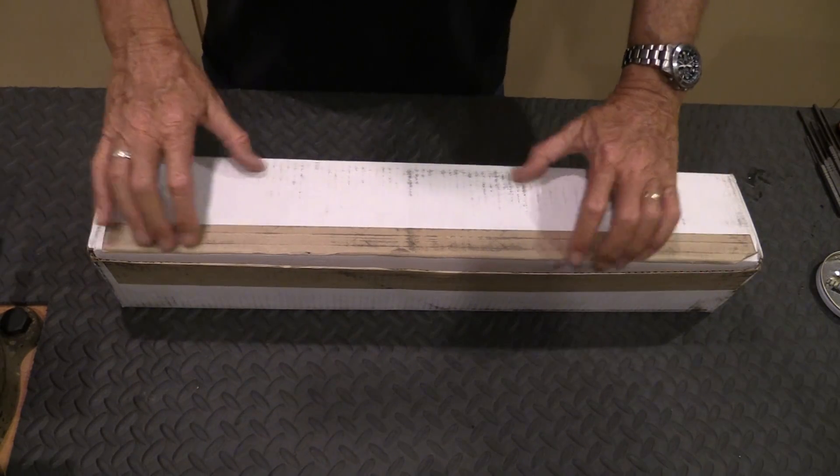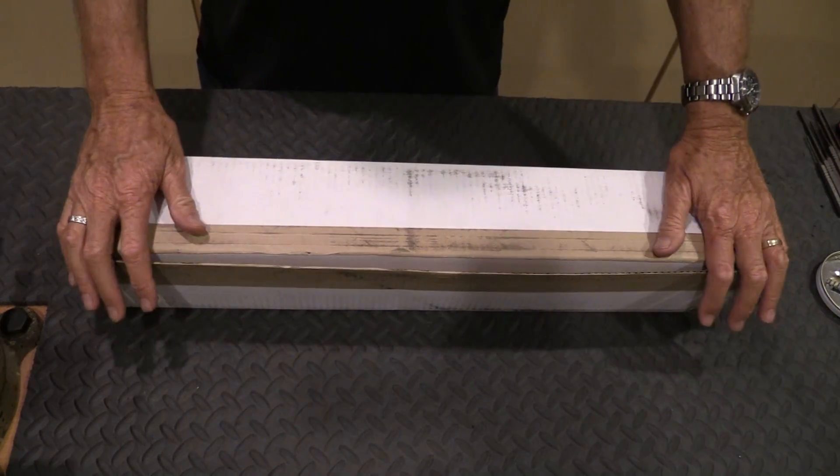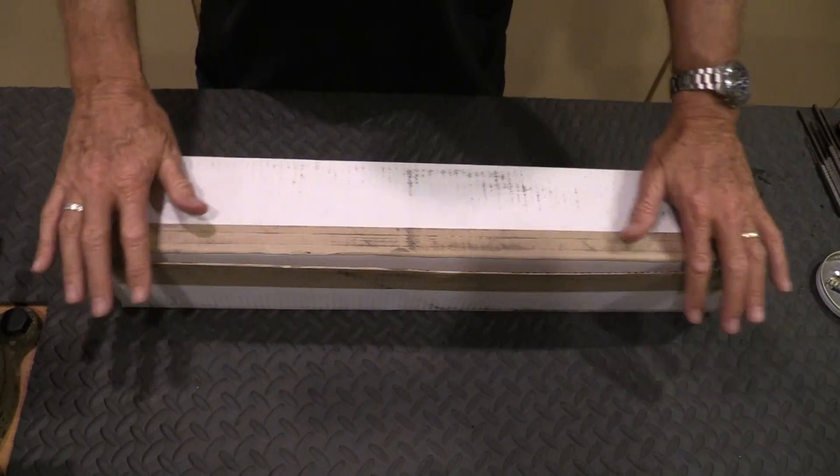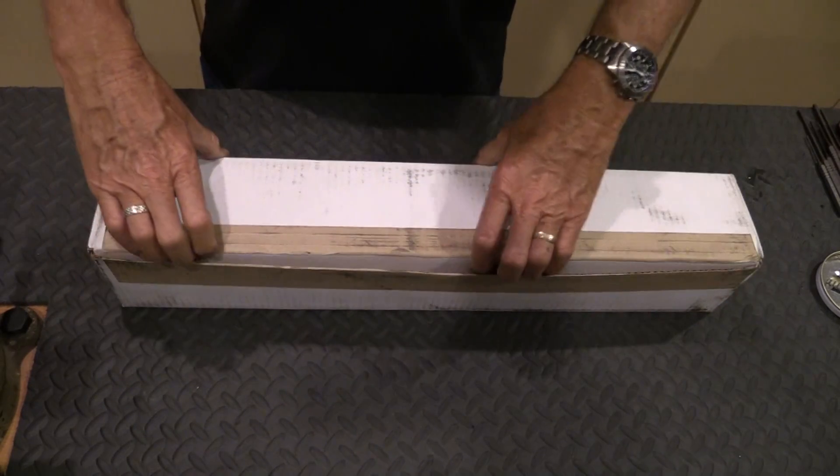It is a heavy barrel chambered in .223/.556. It's got a 1/8th twist. This is how it comes from White Oak Armament.